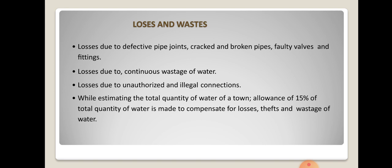The main losses are due to defective joints in pipes. The distribution line consists of various pipes joined by connections — at some points there may be defects in joints leading to leakages, broken pipes, faulty valves or fittings. This leads to continuous wastage of water. There may also be illegal connections for agriculture or other purposes. While estimating the total quantity of water required for a town, an allowance of 15 percent of the total water is usually made to compensate for losses due to wastage and theft.